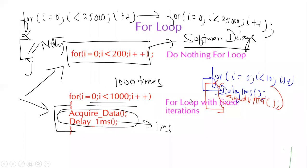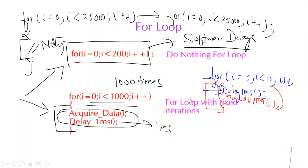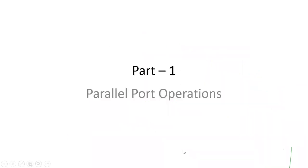With this minimal amount of information — firmware basics we have reviewed — it is sufficient to deal with any complex application in embedded C programming. Now let us move on to basic parallel port operation.